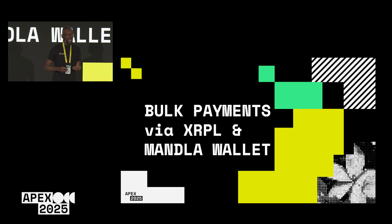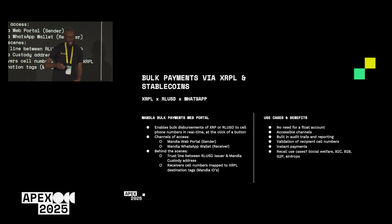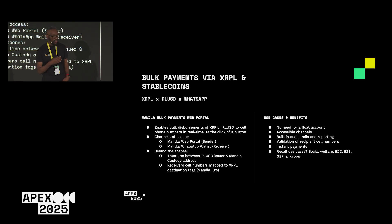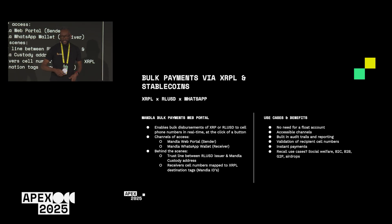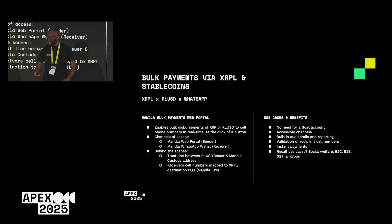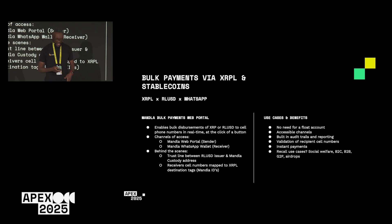Bringing all of this together, the question is how have we at Manla Money enabled bulk payments via everyday tools? We've developed the Manla Money bulk payments web portal, which allows an administrator to log in with their XRPL wallet and enter recipient cell numbers — say a thousand numbers or upload a CSV. You click pay, just a single click, and all recipients are paid the specified amount. This could be a payment in XRP, RLUSD the stablecoin, or any other issued asset on the XRP Ledger. The benefits are that it's immediate, low cost, and you have an audit trail to prove to funders.